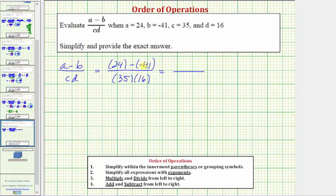Remember, subtracting a negative is the same as adding a positive. So this is the same as 24 plus 41, which equals 65. In the denominator, we have 35 times 16, which equals 560.